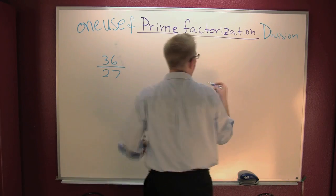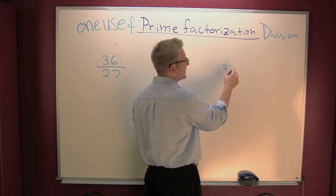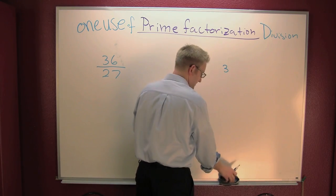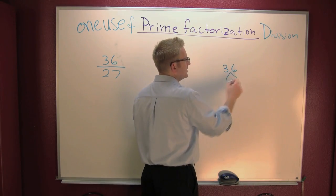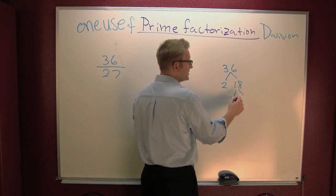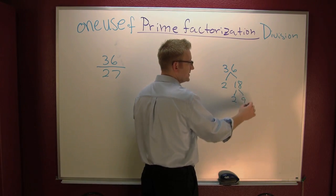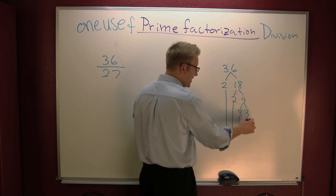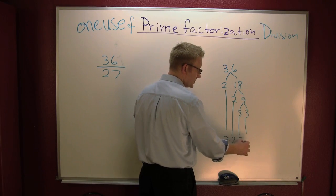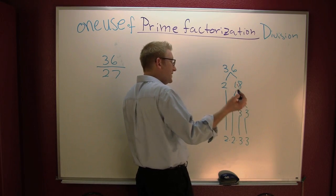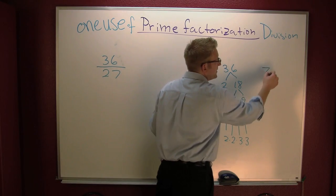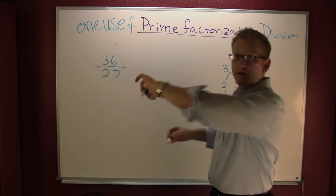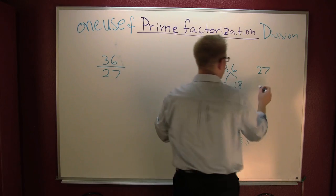So I'm going to break down 36. That's 2 and 18, that's 2 and 9, that's 3 and 3. Bring it all down: 2 times 2 times 3 times 3.